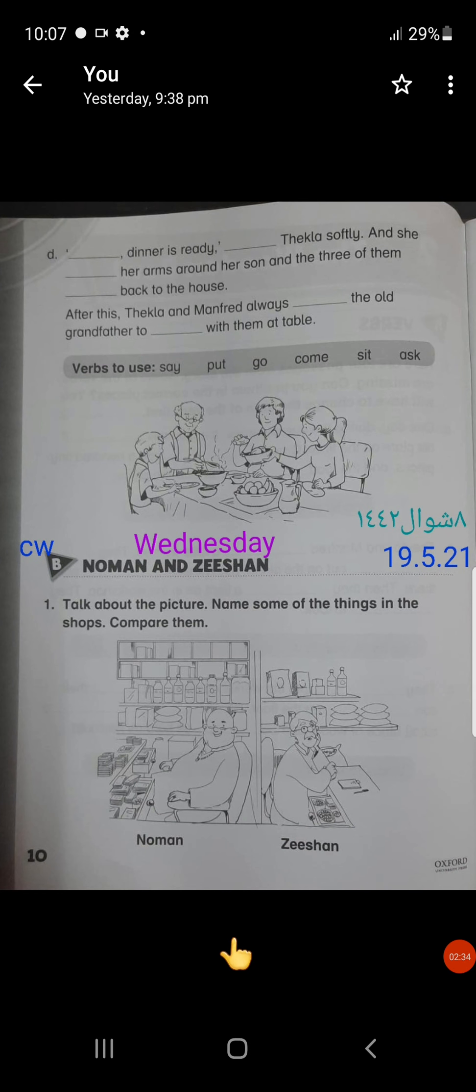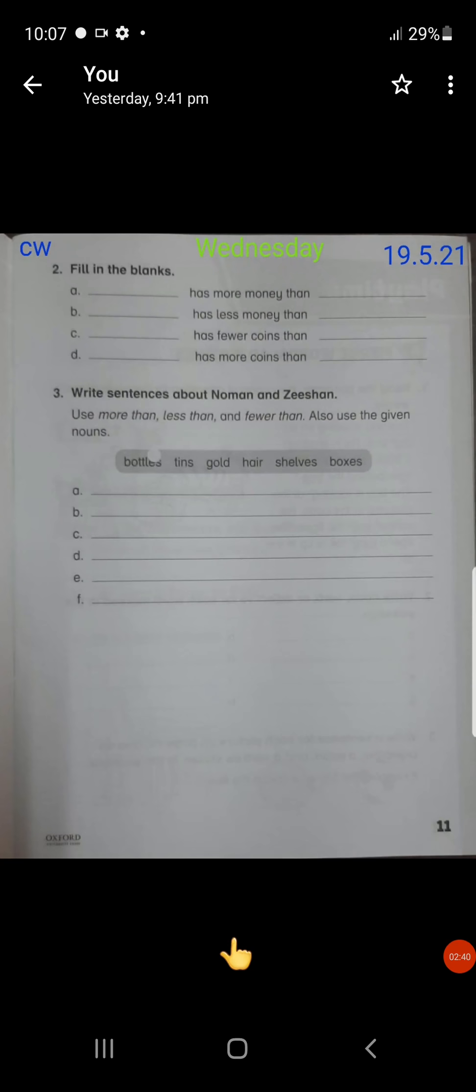There are some shelves and on the shelf there are some boxes, some packets, some bottles, some sacks. And Zishan has a lot of coins in the drawer. So what we have to do? We have to compare that who has more and who has less.